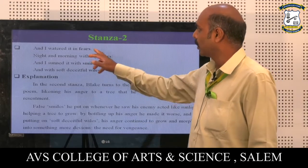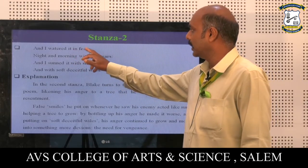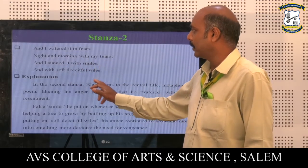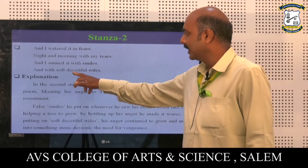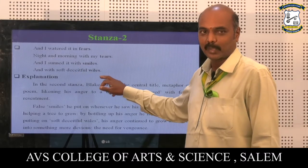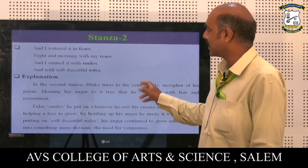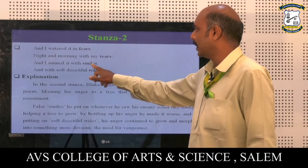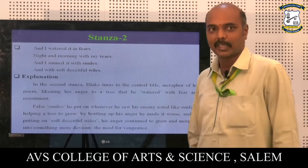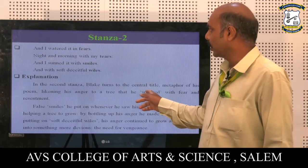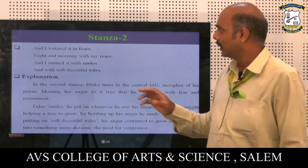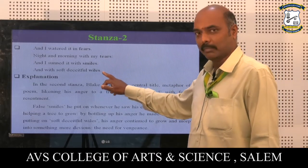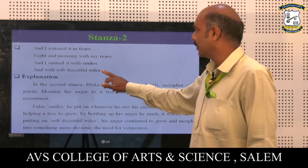In stanza two, the lines read: 'And I watered it in fears, night and morning with my tears. And I sunned it with smiles and with soft, deceitful wiles.' The rhyming scheme here is A, A, B, B — fears, tears, smiles, wiles.